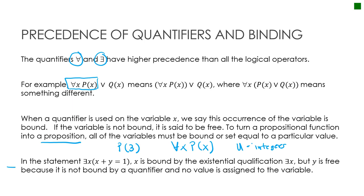In the statement 'there exists an x such that x plus y equals 1,' x is bound by the existential quantifier, but y is free because no value is assigned to it and it isn't bound by any quantifier. Therefore this is not a proposition.